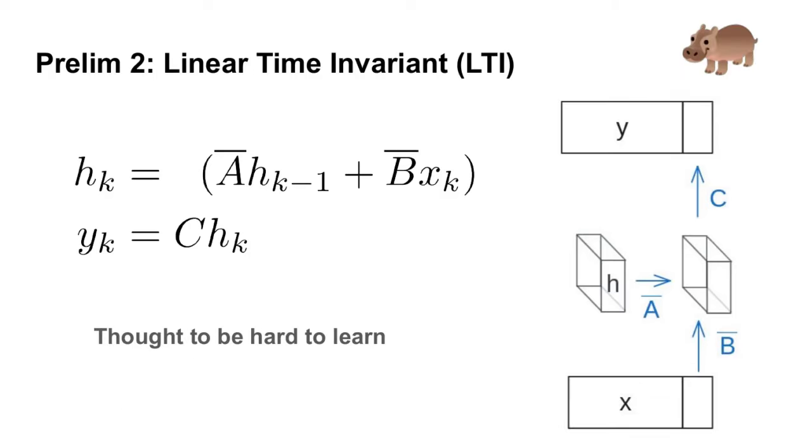Our second warm-up is a model known as a linear time invariant model, which we'll refer to as an LTI model. This model is basically exactly the same as the previous vanilla recurrent neural network, except we've removed the non-linearity sigma. This model is just computed in exactly the same way, except to compute the next hidden state h, we don't need to apply a non-linearity.